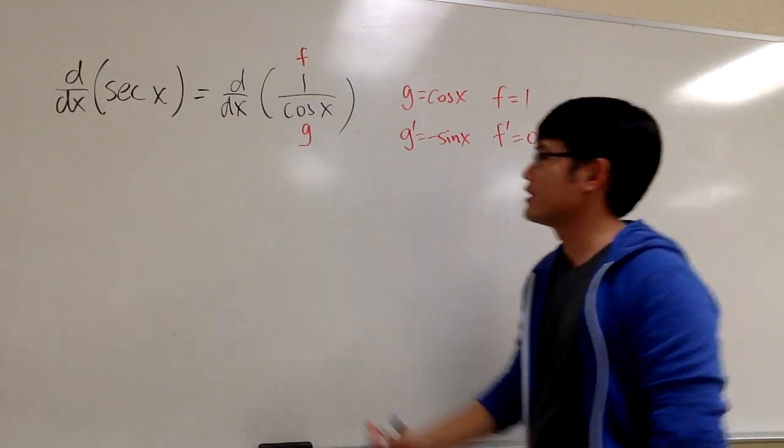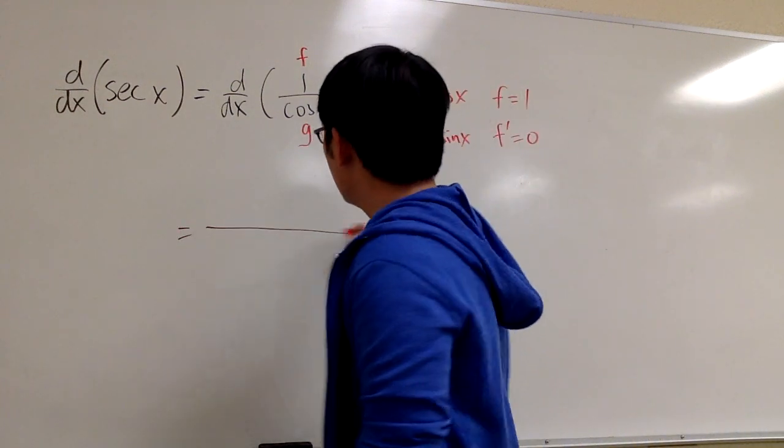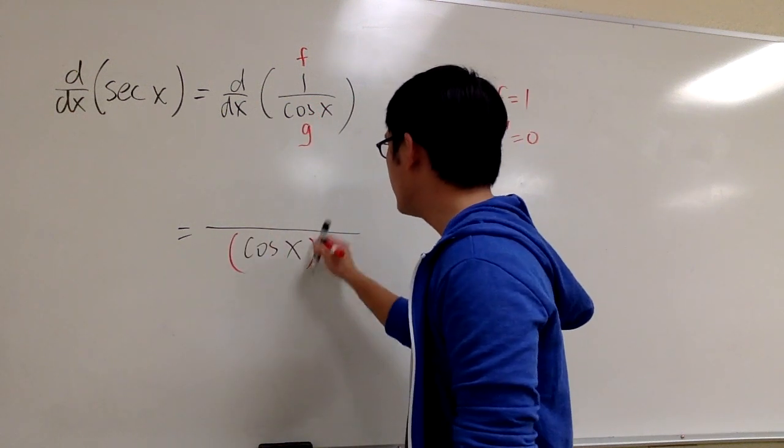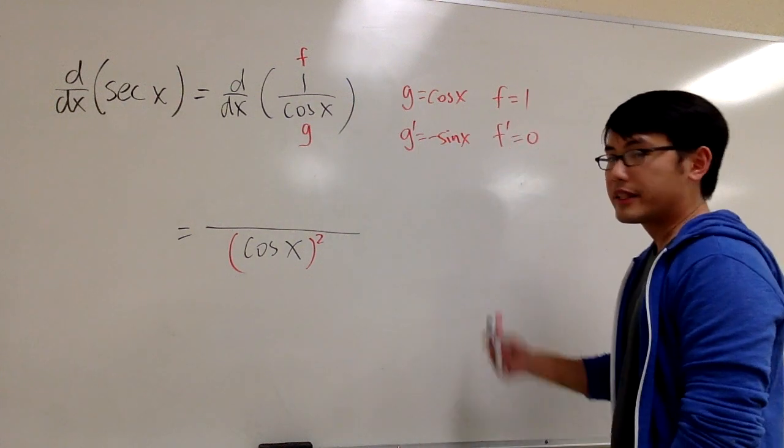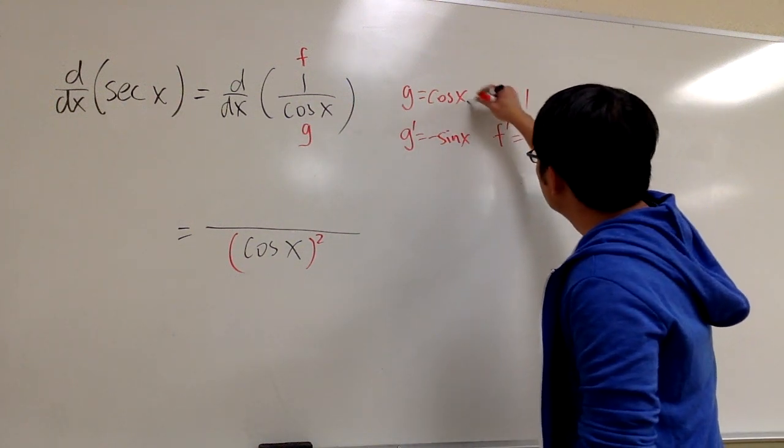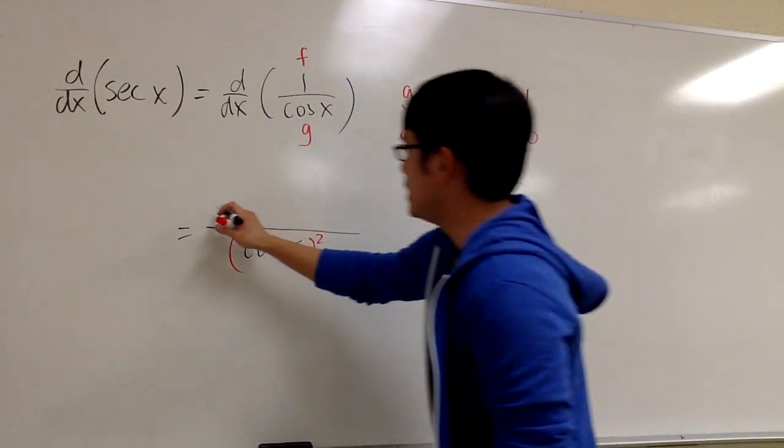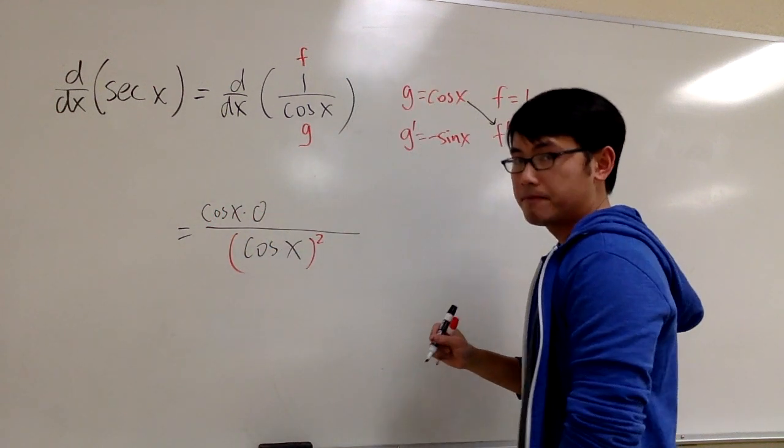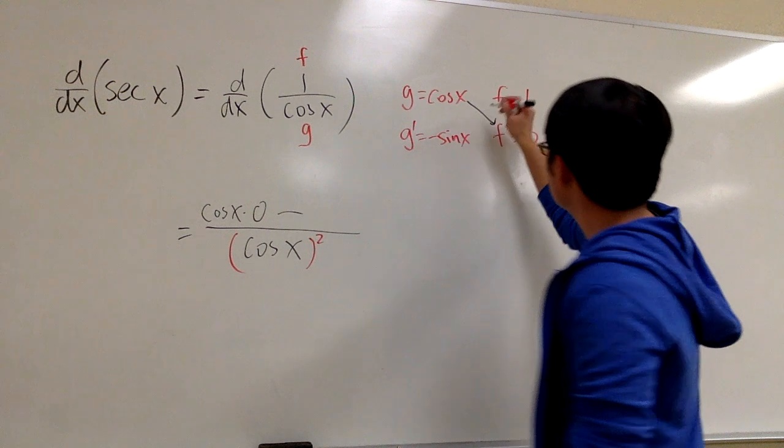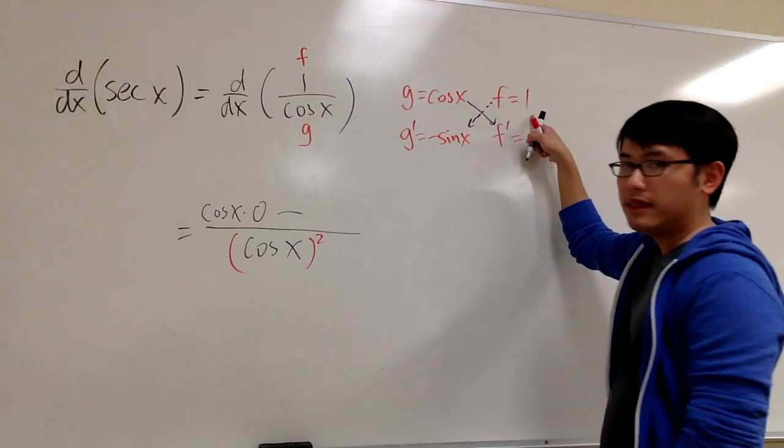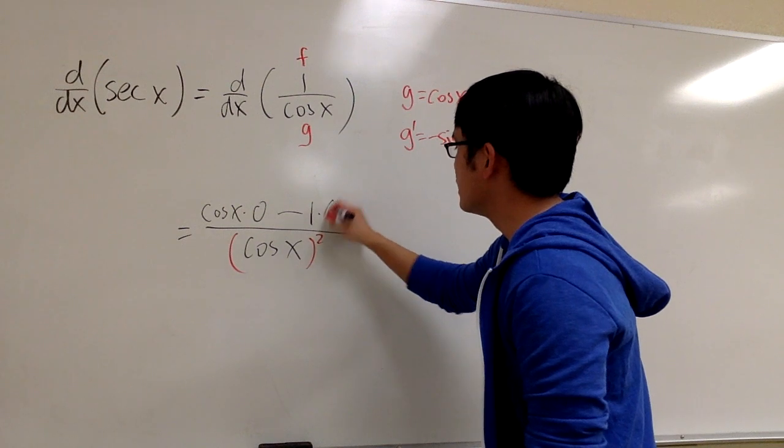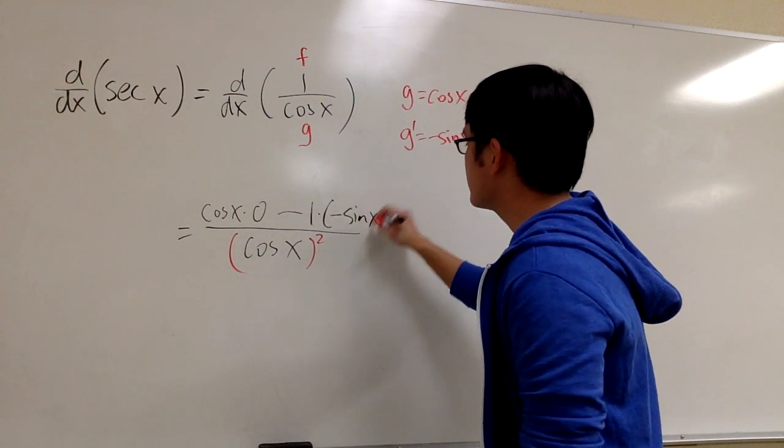And we're ready to work. This right here, let's write down the denominator and square that, which is cosine x, and then we square that. On the top, we take cosine x times 0. Let me put this down. Cosine x times 0. And we subtract. We go this direction. 1 times negative sine. 1 times negative sine x.